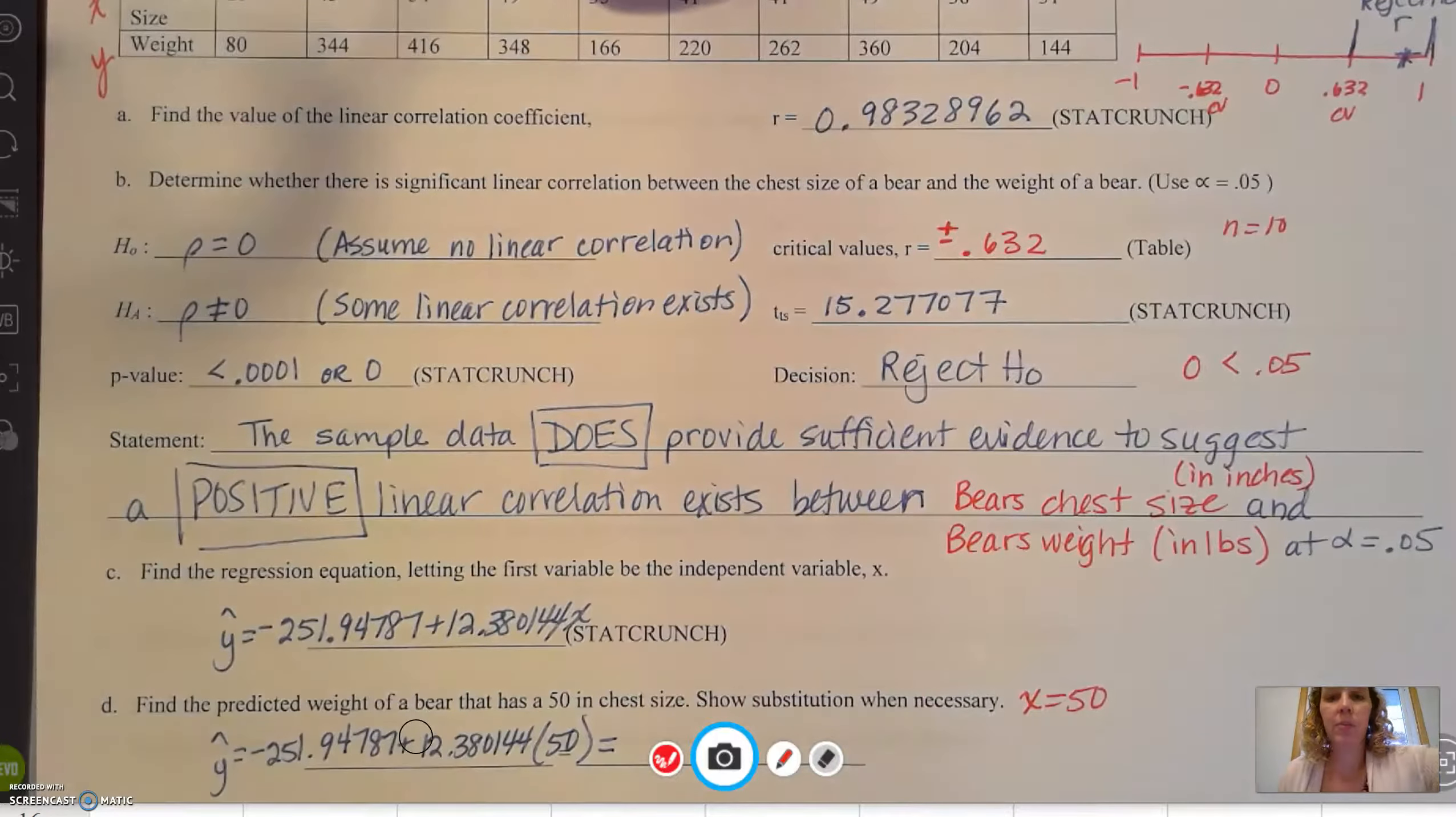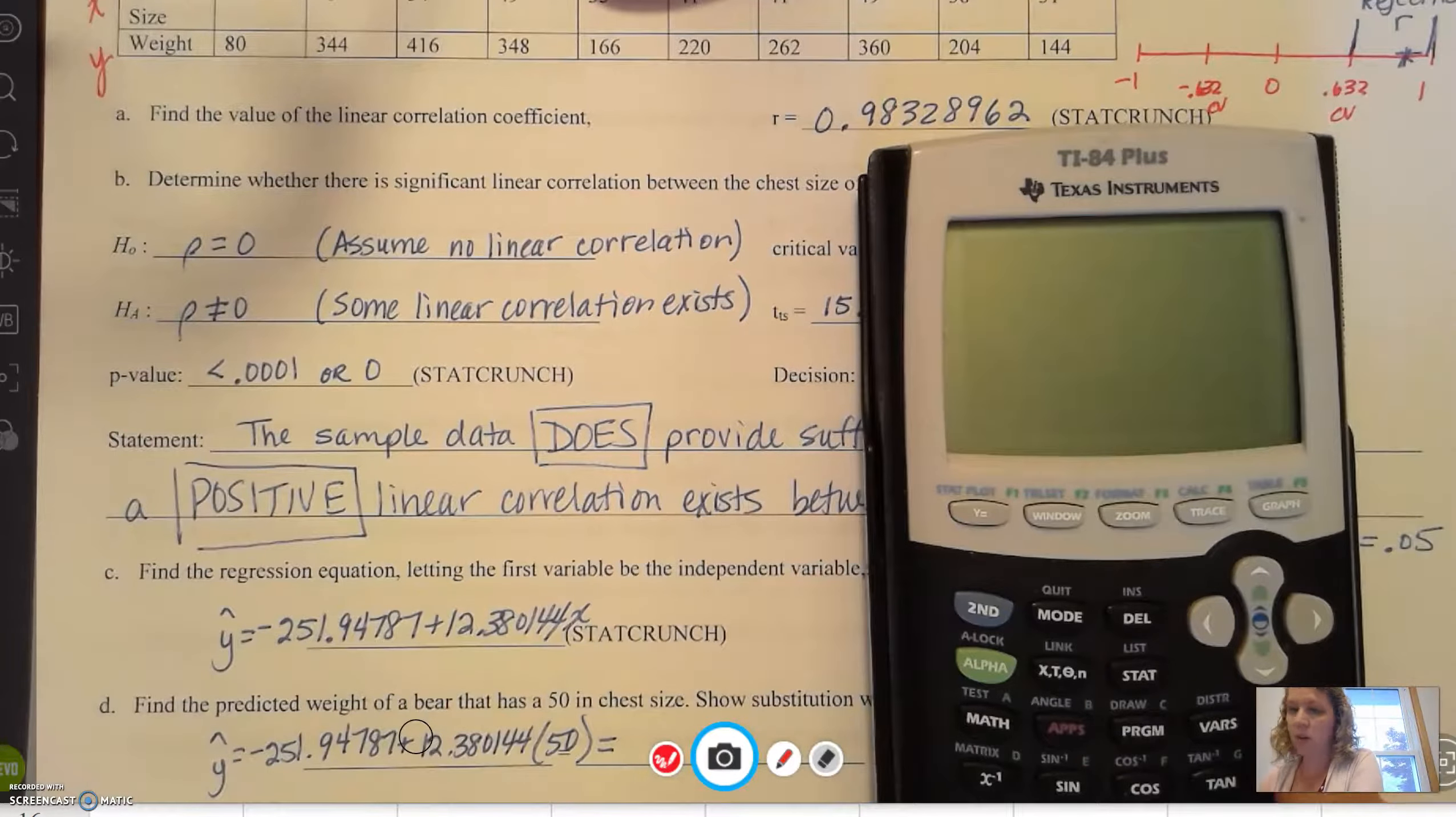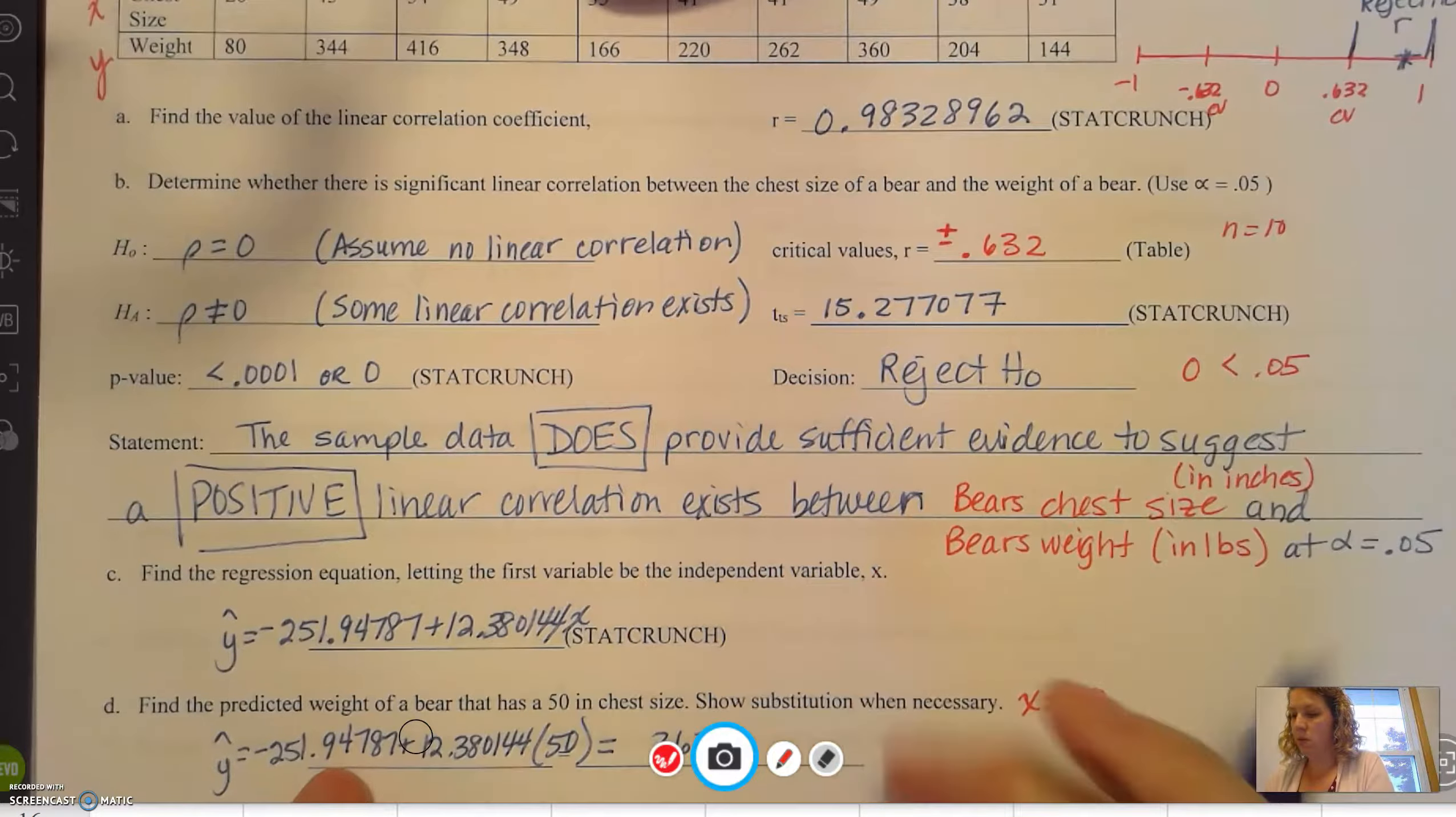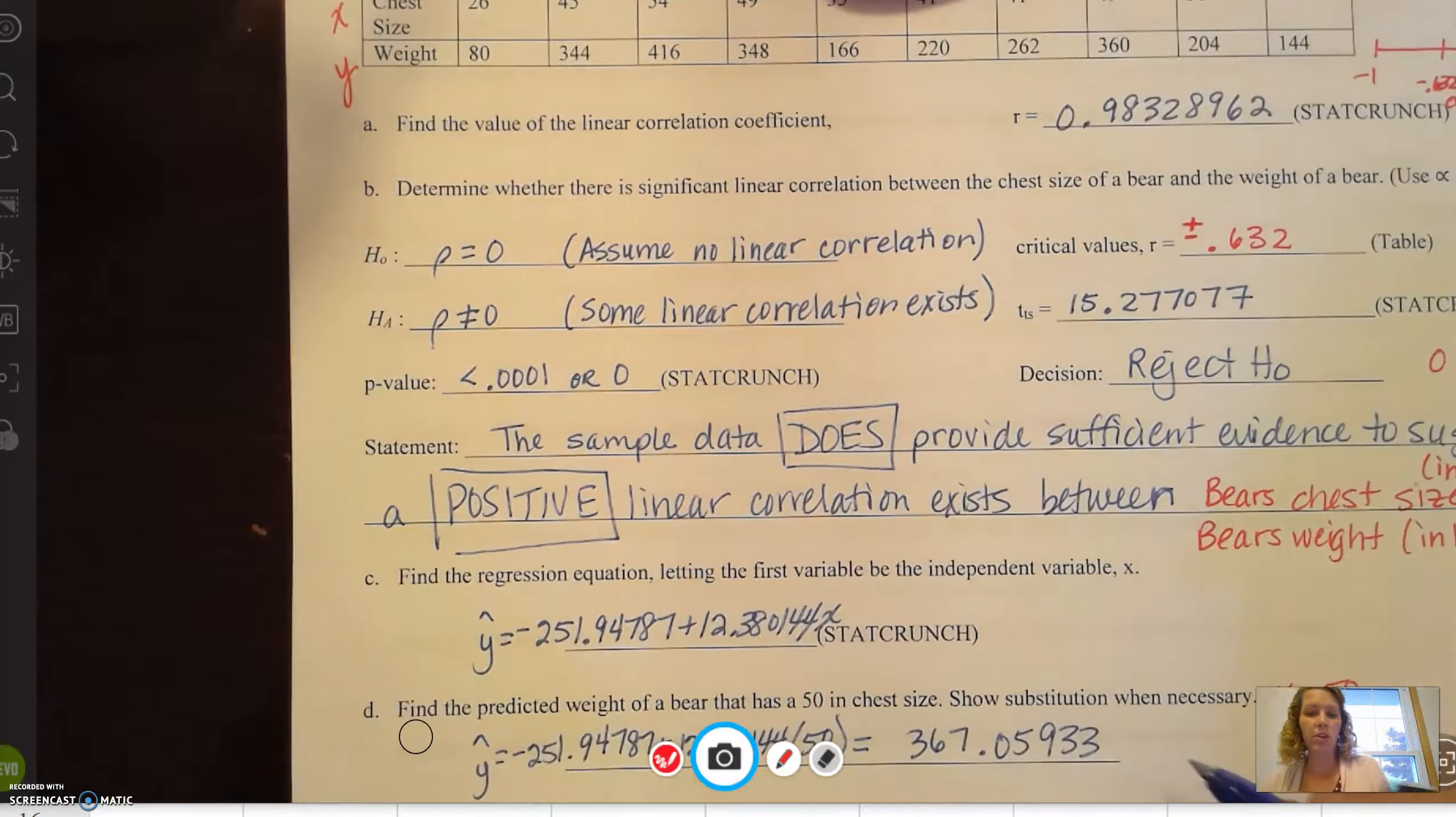With our calculator here, we can go ahead and take that number. Let me clear it all out. You get -251.94787 + 12.380144 times 50, and we're going to hit enter. It gives us an answer of 367. 367.05933.